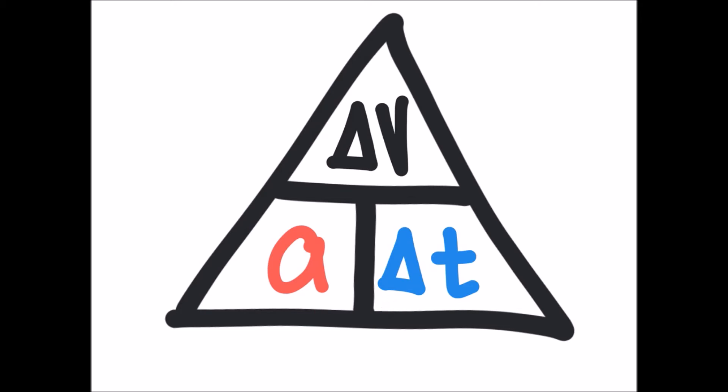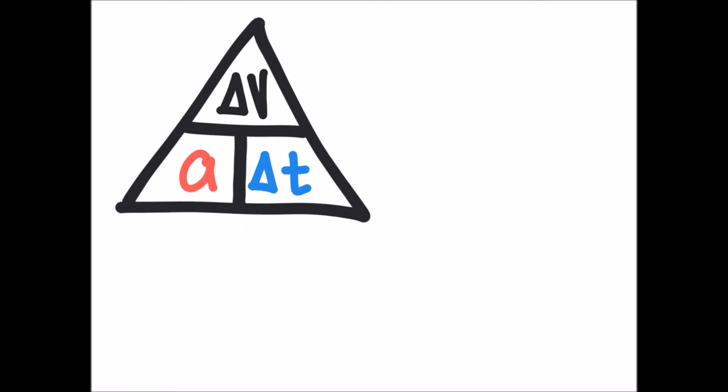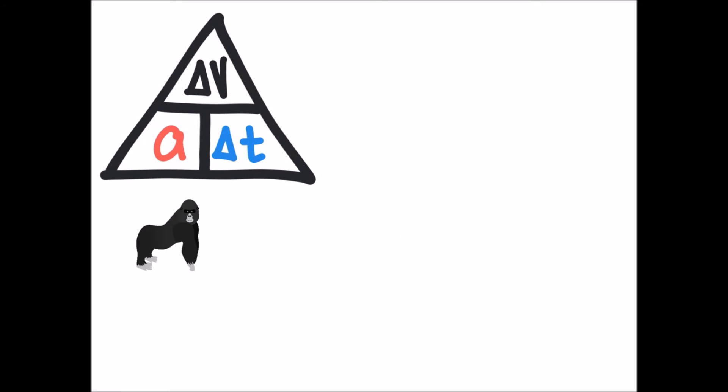Let's rearrange for delta v, delta t, and acceleration. I'm going to slide my triangle over there and we're going to bring back the gorilla. We're going to look for change in velocity first. So you're going to place your hand over the variable that you're looking for.